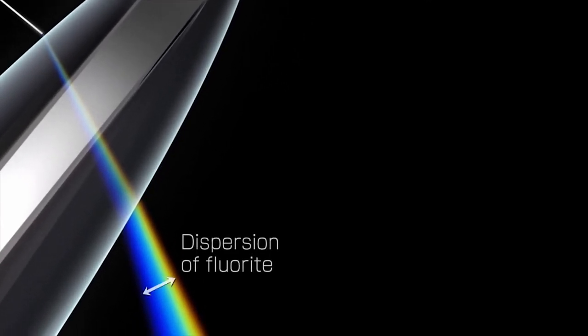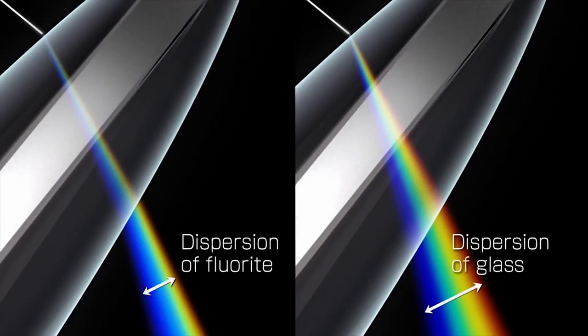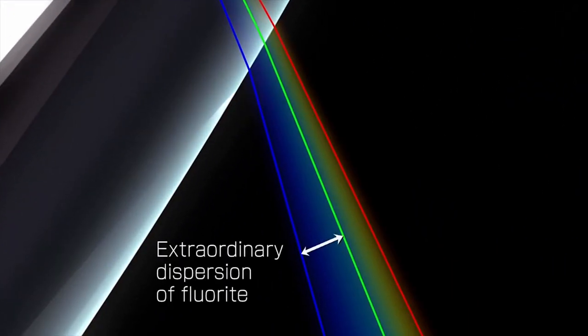Fluorite demonstrates lower dispersion than glass. Furthermore, the ratio of dispersion differs, with the range from green to blue being especially wide.